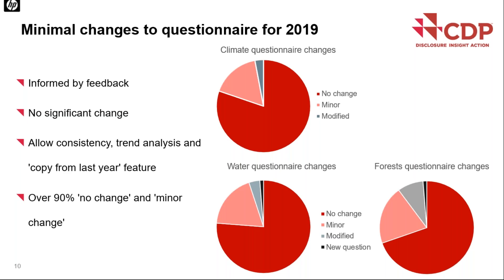These minimal changes were made because in 2018 the questionnaires underwent a lot of change with 16 new sectors, TCFD alignment, and a new online system. We received feedback from companies requesting minimal changes, and any changes processed were informed by significant feedback and correction of errors. This will allow for consistency, year-on-year trend analysis, and enable the copy-from-last-year functionality which has been requested by so many companies. Minor changes include wording corrections, additional dropdowns, or simple clarifications. There are no major changes for the 2019 questionnaires.